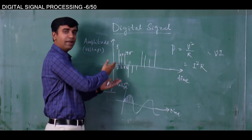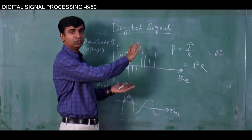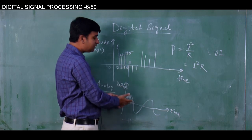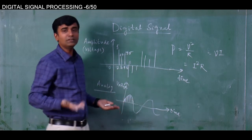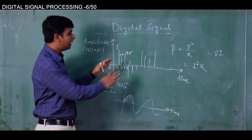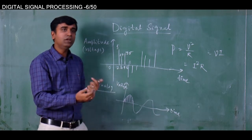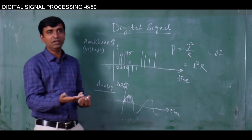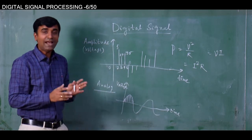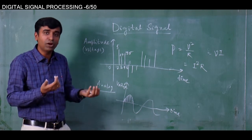For the digital signal, you do not have values at each and every point of time, so definitely this summation is less than the analog summation. Therefore, power consumption is less. This very simply explains why during transmission a digital signal requires less power — that is our requirement and that is beneficial for us.